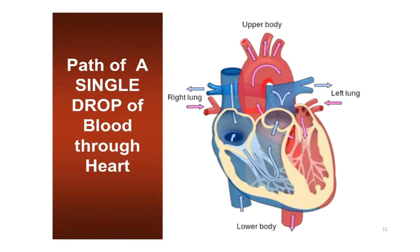Let's think about the path of a single drop of blood through the heart. One thing to make really clear is that this is a continuous circuit — there's no beginning and no end. Although we often teach this starting with deoxygenated blood returning through the vena cava, you don't have to start there. You want to get to the point where you can imagine yourself as a red blood cell in any part of the body and be able to reconstruct what structure that blood cell is going to pass through next.